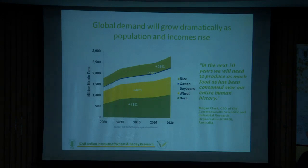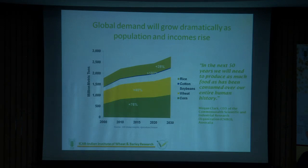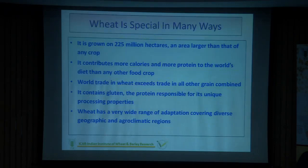Wheat is not region-specific — it is grown across all continents and cultivated in more than 100 countries. It is our breakfast, lunch, and dinner. We consume more wheat than other crops. Worldwide, it is cultivated on more than 220–225 million hectares of area, and it contributes more calories than all other grains.